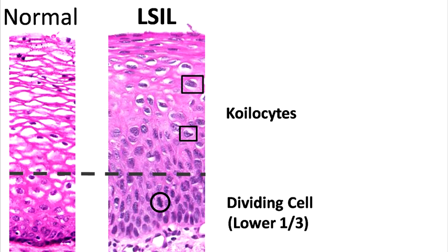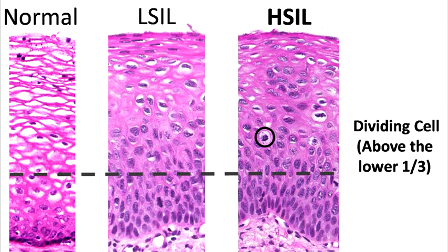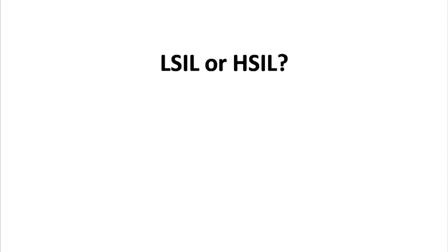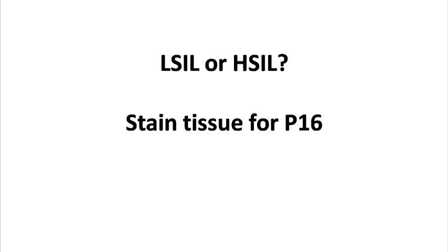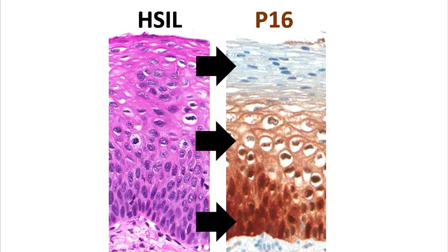In addition, dividing cells may also be seen in the lower one-third of the epithelium. High-grade lesions are defined by dividing cells in the upper two-thirds of the epithelium. It's the location of these dividing cells that defines low-grade versus high-grade lesions. In cases where it's difficult to tell, some of the biopsy tissue can be stained with a special stain called P16. If there is strong and diffuse staining of a significant portion of the epithelium, then P16 is considered overexpressed and the lesion will be classified as a high-grade precancerous lesion.